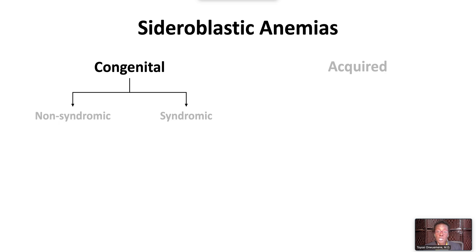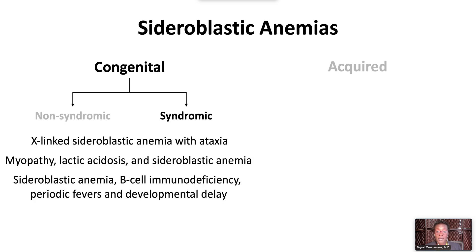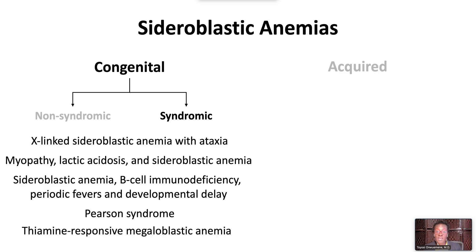The congenital syndromic sideroblastic anemias have other clinical manifestations, including X-linked sideroblastic anemia with ataxia; myopathy, lactic acidosis, and sideroblastic anemia; sideroblastic anemia with B-cell immunodeficiency, periodic fevers, and developmental delay; Pearson Marrow Pancreas Syndrome, associated with acidosis and pancreatic insufficiency; and thiamine-responsive megaloblastic anemia, characterized by megaloblastic anemia, diabetes, and sensorineural deafness.